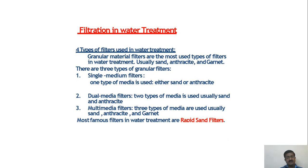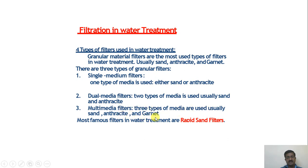Granular material filters are the most used type in water treatment, with sand, anthracite, and garnet being common materials. There are three types: single medium filters using either sand or anthracite; dual media filters using sand and anthracite; and multi-media filters using sand, anthracite, and garnet. The most common filters in water treatment are rapid sand filters.